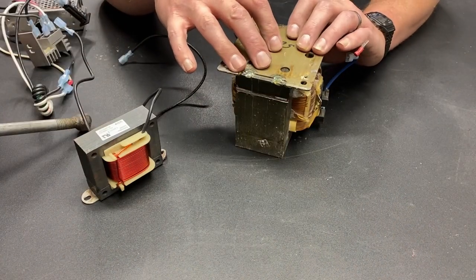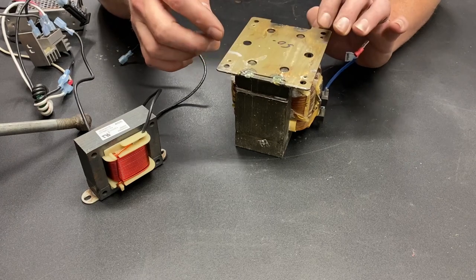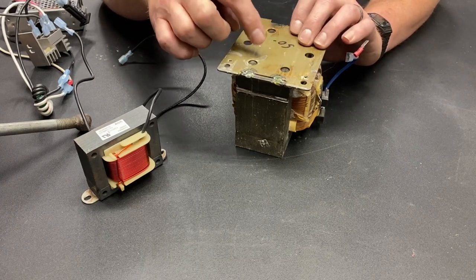So in building a choke out of a transformer, the first question is, how do I take this apart?